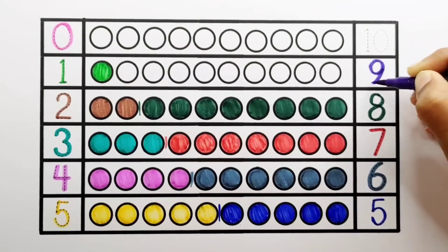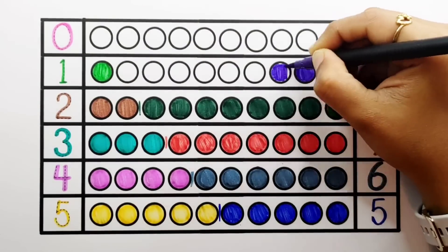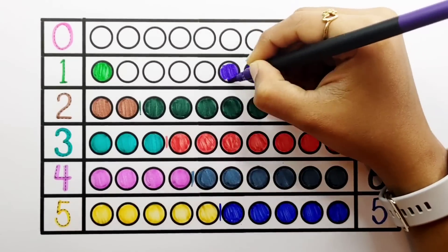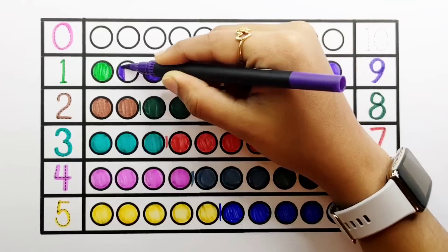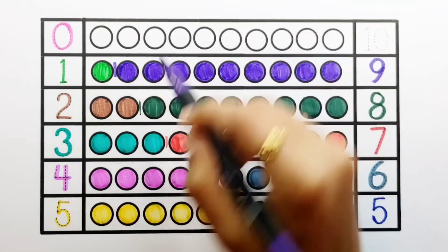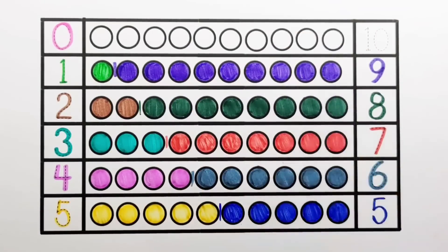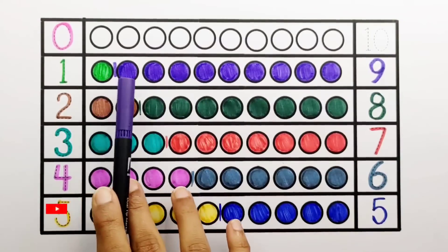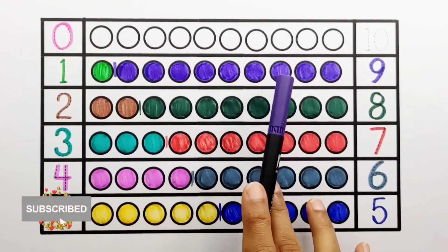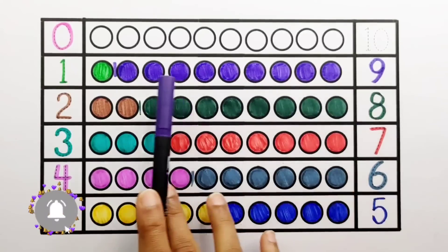Number 9. 1, 2, 3, 4, 5, 6, 7, 8, 9 — 9 balls. 1 plus 9 makes 10. 1, 2, 3, 4, 5, 6, 7, 8, 9, 10. 1 plus 9 equals 10.